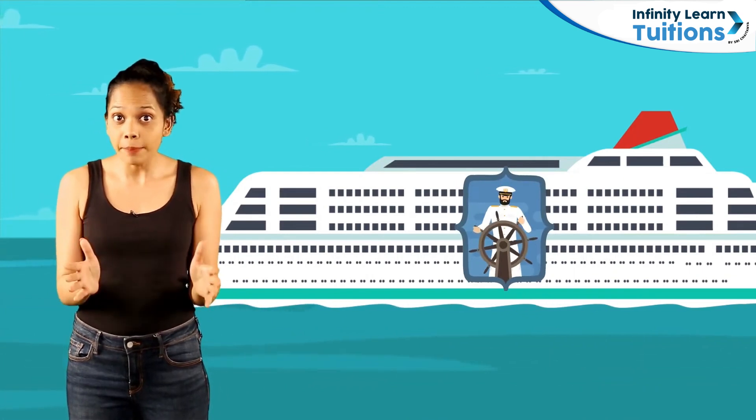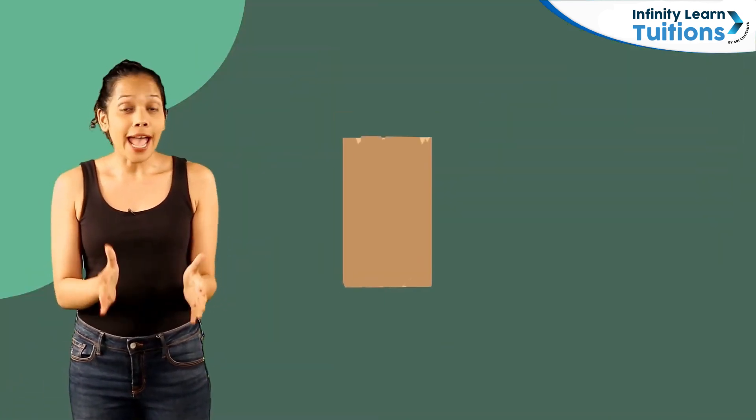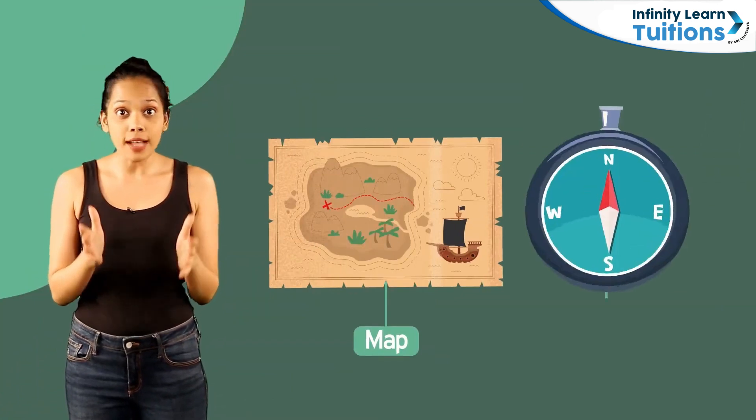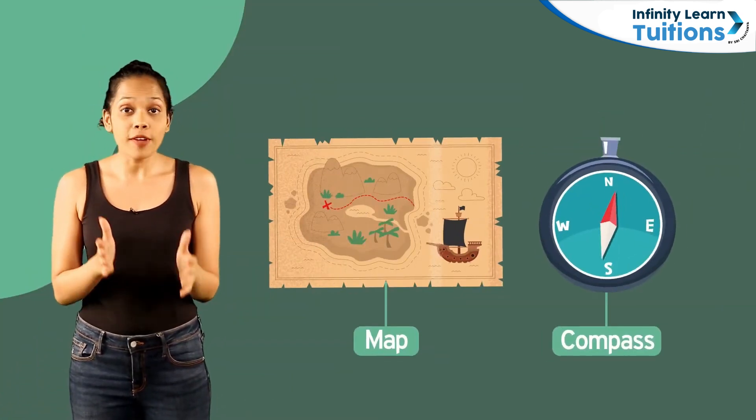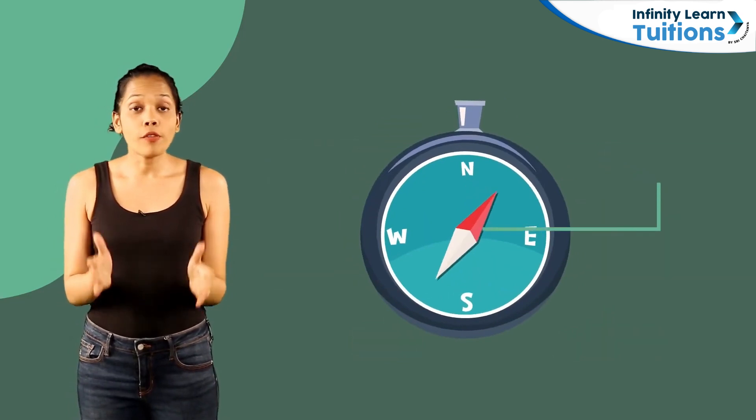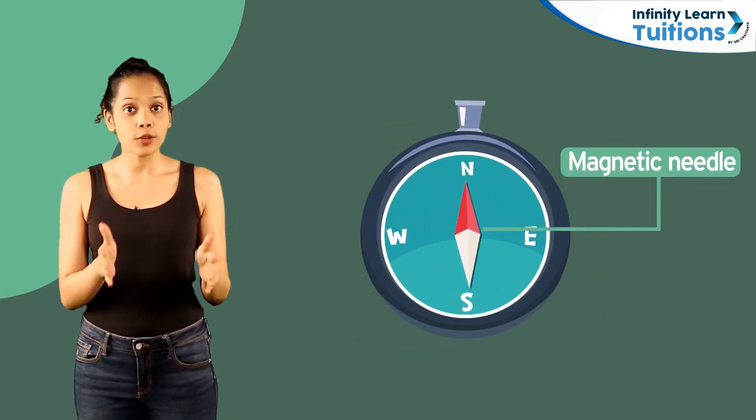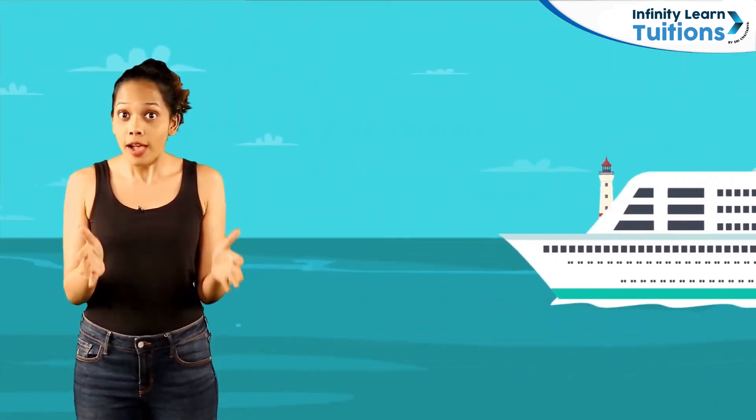Steering the ship alongside the captain was the highlight of this voyage. The captain had a map and a mariner's compass which he used to find directions at sea. A compass consists of a magnetic needle and its north pole always points north. I got an opportunity to witness this first hand during the voyage.